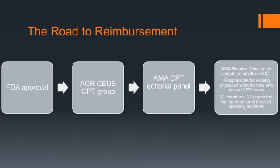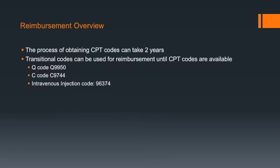Following FDA approval, the American College of Radiology set up a working group to begin the process of getting CPT codes. This group has submitted proposals for contrast ultrasound CPT codes to the AMA CPT panel and the Relative Value Update Committee. The process of obtaining CPT codes can take up to two years. In the meantime, there are transitional codes that can be used for reimbursement until CPT codes are available.